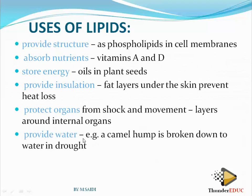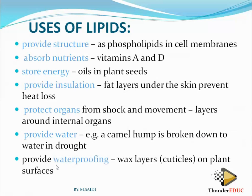Sixth, lipids provide metabolic water. When you break them down, water is released — that's why camels have a large hump that helps them survive in the desert for long periods without water. Seventh, they provide waterproofing. For example, the wax layer — the cuticle — on plant leaves causes water to fall off rather than be absorbed, because of the waxy cuticle.